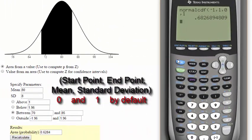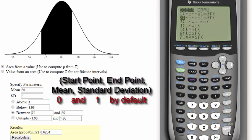With a mean of 80 and a standard deviation of 8, we want to find the percent of students who scored between 70 and 85. This time under normal CDF, we need to enter the start point of 70, then the endpoint of 85.